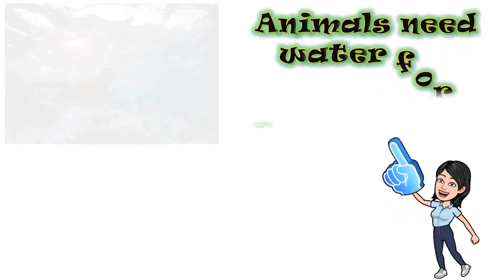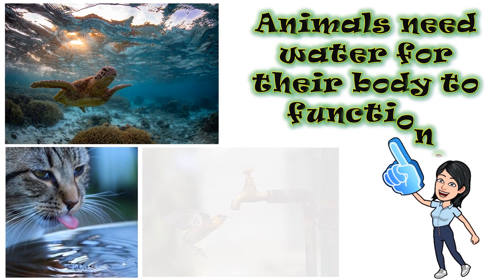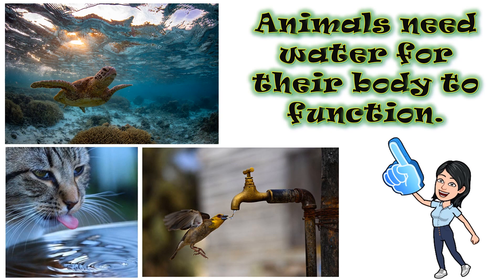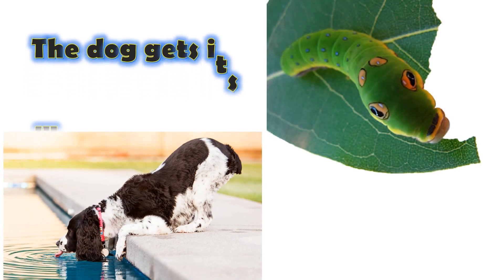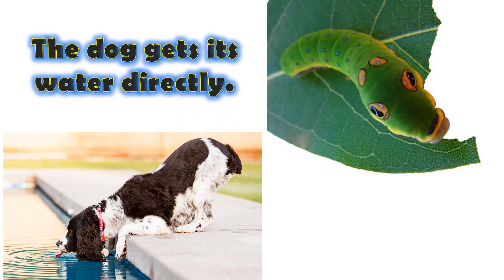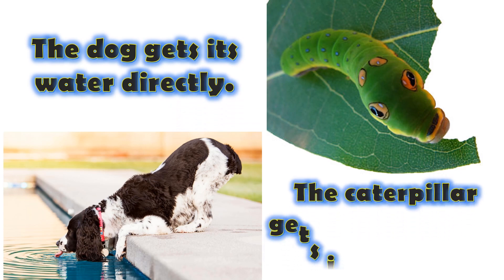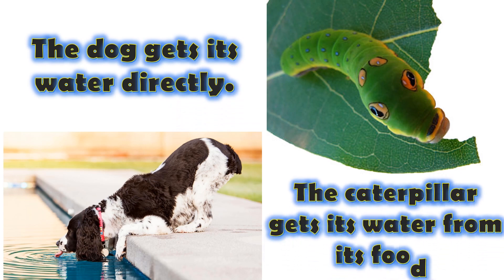Animals need water for their body to function. Water is needed to transport nutrients and waste materials in their body and to regulate body temperature. The dog gets its water directly, while the caterpillar gets its water from its food.